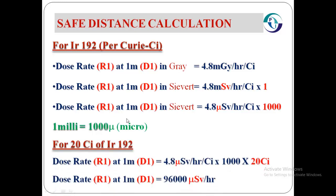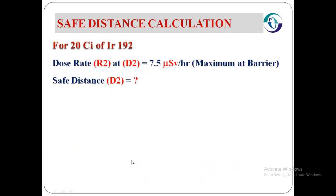This was for 1 Curie. For 20 Curie of Iridium-192, the dose rate R1 at 1 meter (D1) will be this value times 20 Curie, which equals 96,000 microsievert per hour at 1 meter. For 20 Curie of Iridium-192, the dose rate R2 at D2 will be 7.5 microsievert per hour. This value is the maximum we require at the barrier or barricade point.